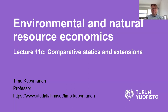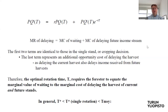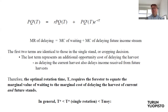In the previous lesson, we found the optimal solution to the Faustmann type optimal rotation model. We found that the forest owner would have this kind of length of rotation such that the marginal revenue of delaying the harvest would be equal to the marginal cost of waiting for this current rotation, plus the marginal cost of delaying future income streams from future rotations.